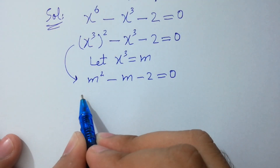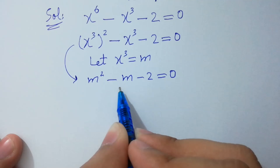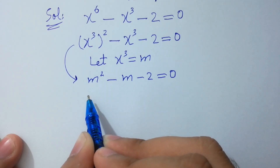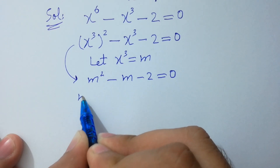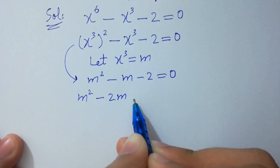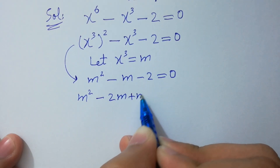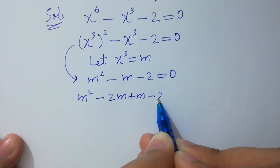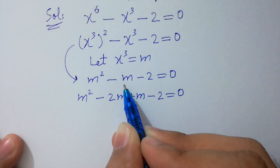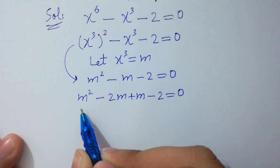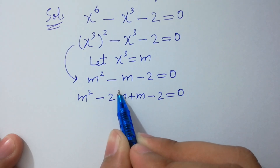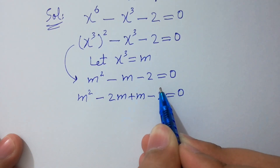Next step: this is a quadratic equation. Let's factorize it. We split the middle term: m squared minus 2m plus m minus 2 equal to 0, since negative 2 plus 1 equals negative 1, which matches the original equation m squared minus m minus 2 equal to 0.